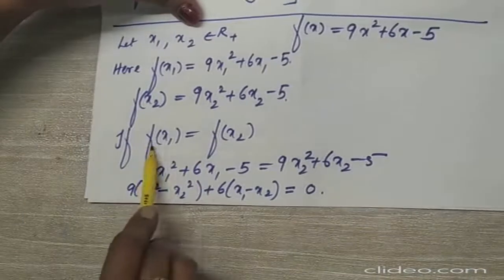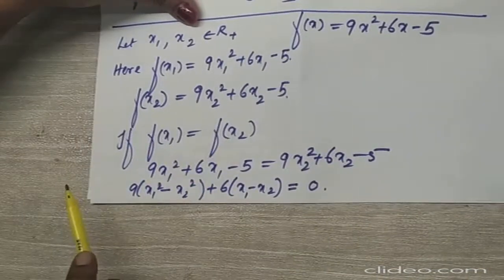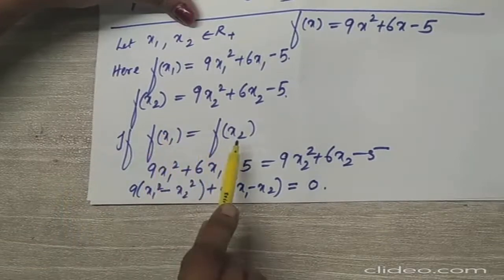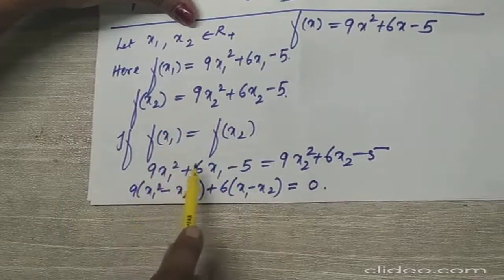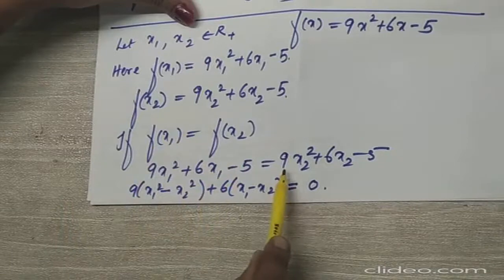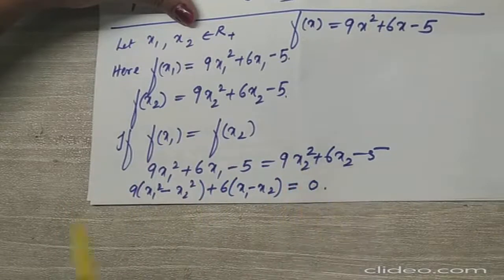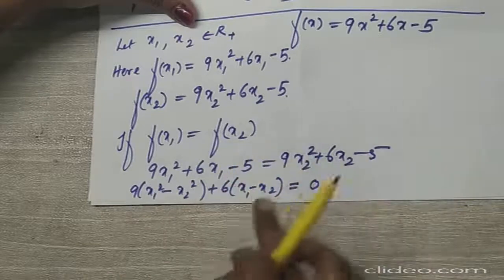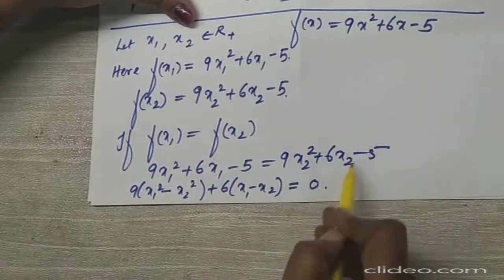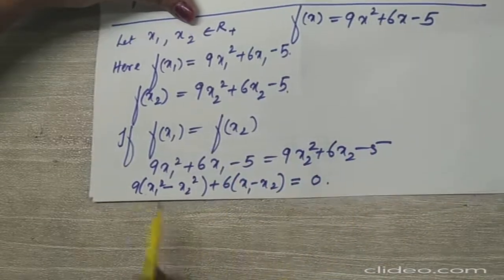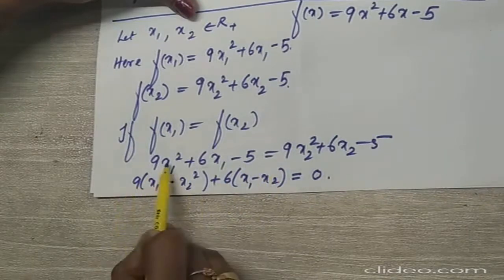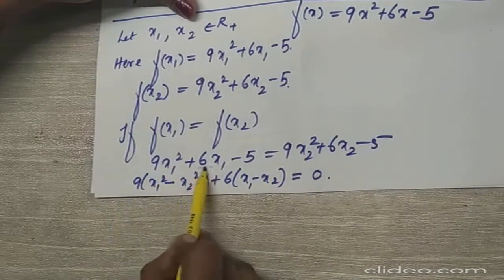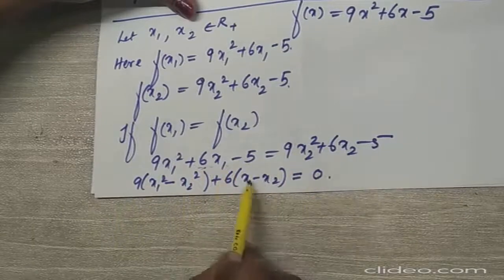Assuming f(x₁) = f(x₂), I put the values: 9x₁² + 6x₁ - 5 = 9x₂² + 6x₂ - 5. Bringing all terms to the left-hand side, the -5 terms cancel, leaving 9(x₁² - x₂²) + 6(x₁ - x₂) = 0.